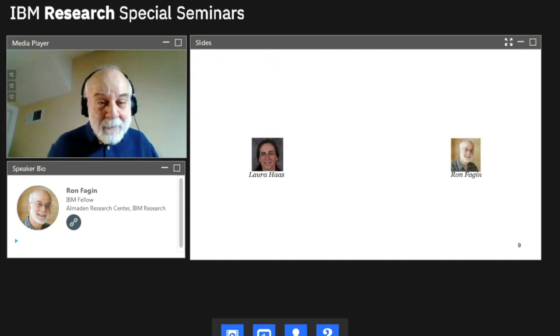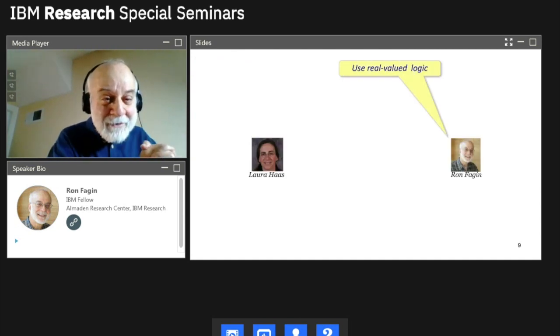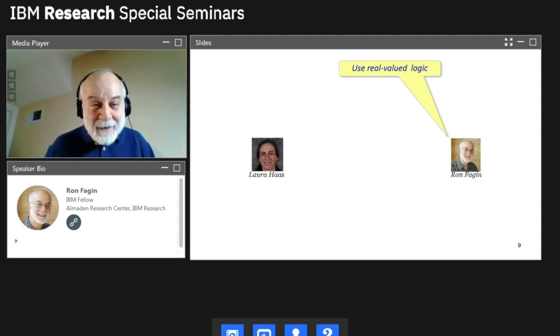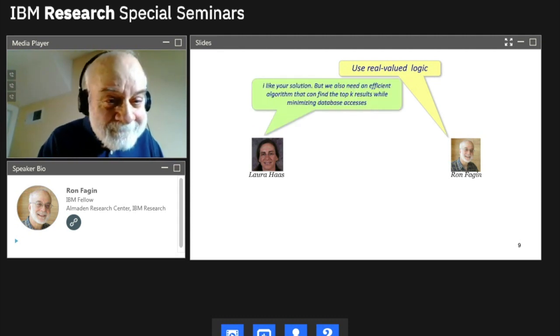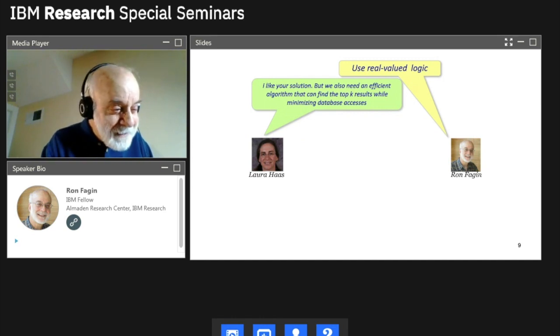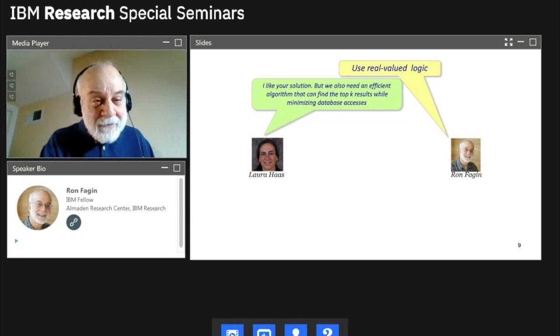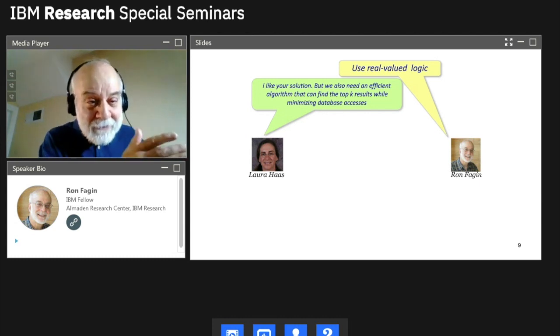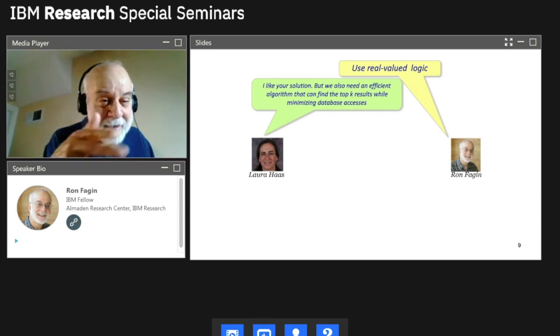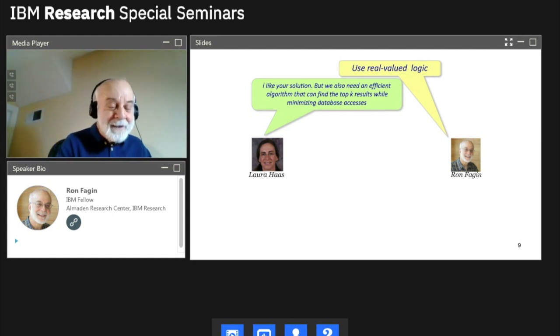Now in real valued logic, conjunction is often taken to be the min. This is what was the original motivation in doing fuzzy logic by Zadeh. He took conjunction to be the min and disjunction to be the max. But people use other rules in other real value logics. So then I said, great. I went back to Laura and said, Laura, good news. I've got a solution for you. Use real valued logic. I was happy. I thought I was done. And Laura said, well, hmm. She says, you know, I like your solution. She said, but you know, we need a practical algorithm. We can't just look at every object in the database. We just can't afford that, Ron. We need an efficient algorithm.